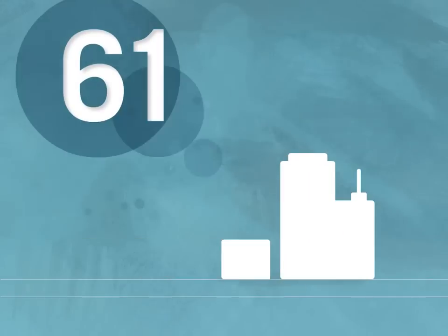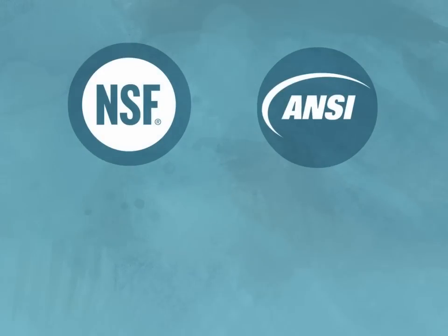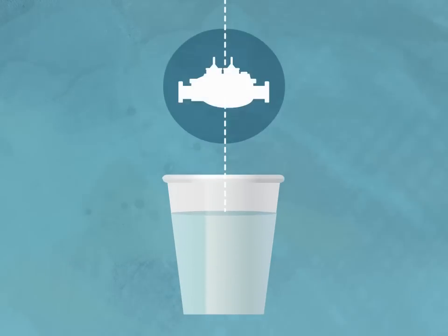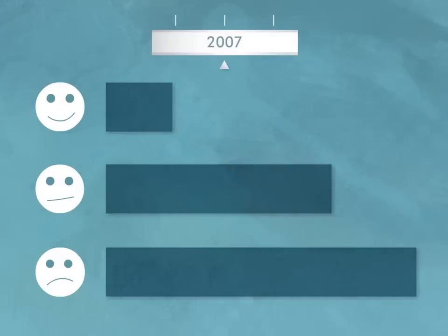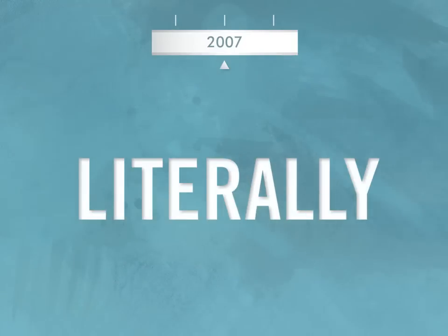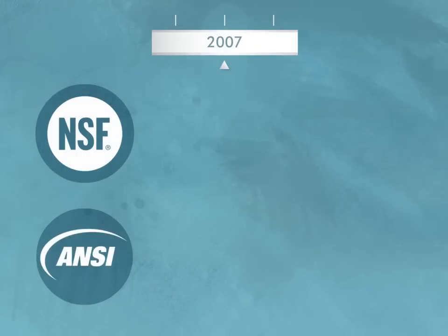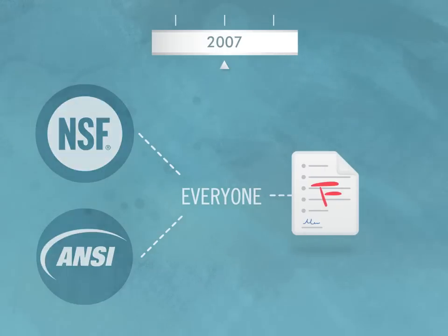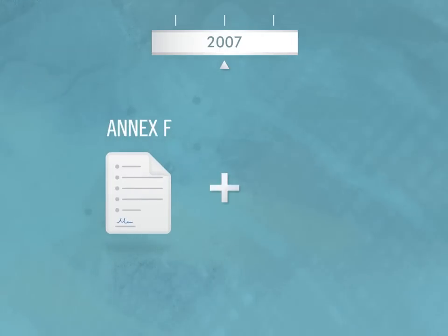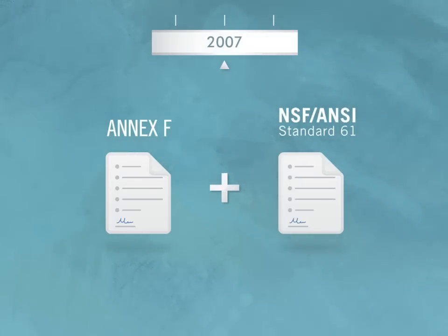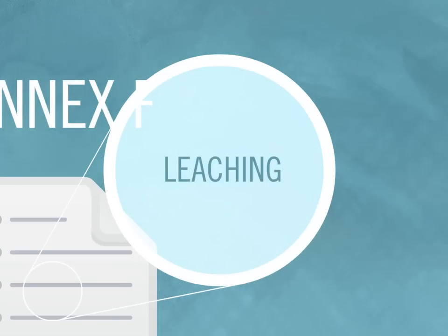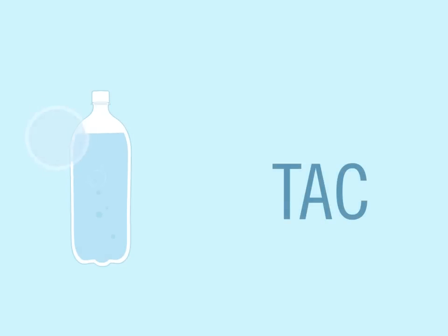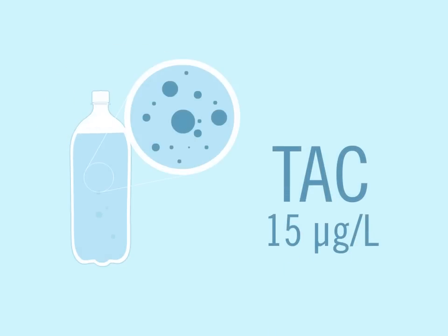61 — a number every water utility knows well. NSF ANSI Standard 61 is all about the health effects of drinking water system components. Right now it's the law in 46 states. We've known for a while that the less lead we take in the better. Since 2007, the industry has been forced to get the lead out — literally. That's when NSF International and the American National Standards Institute added Annex F to Standard 61, modifying a performance standard for chemical extraction — a fancy way of saying leaching — for lead. The total allowable concentration, or TAC, of leached material was 15 micrograms per liter.